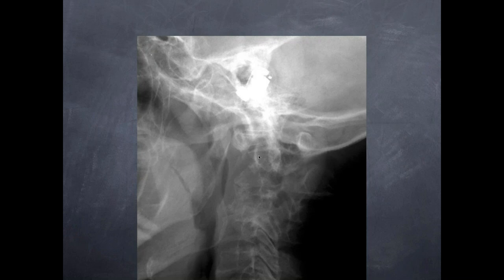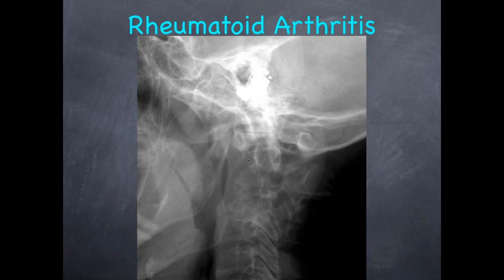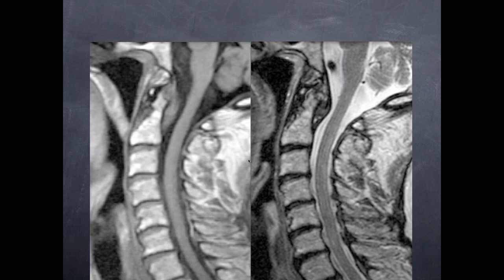I'm skeptical of seeing a lot of these things on plain radiographs. This is a patient with rheumatoid arthritis in this area. On the MR scan it looks like there's pannus formation and synovial thickening. You can see the pannus and some erosive changes anteriorly.